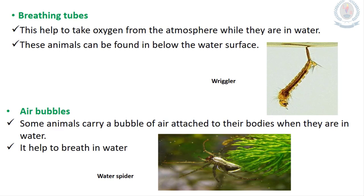Breathing tubes can be found in animals who live below the water surface, such as the wriggler, which is a life cycle stage of the mosquito. This breathing tube helps to take oxygen from the atmosphere while they are in water. Some animals such as the water spider carry a bubble of air attached to their bodies, and that air bubble helps them to breathe in water.